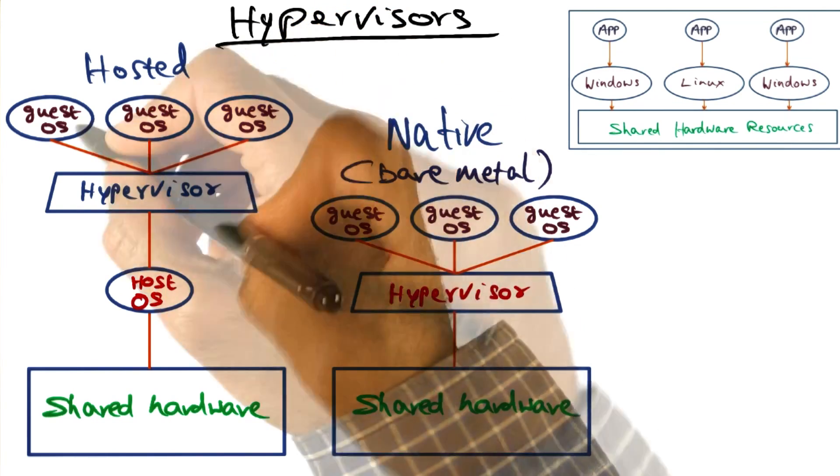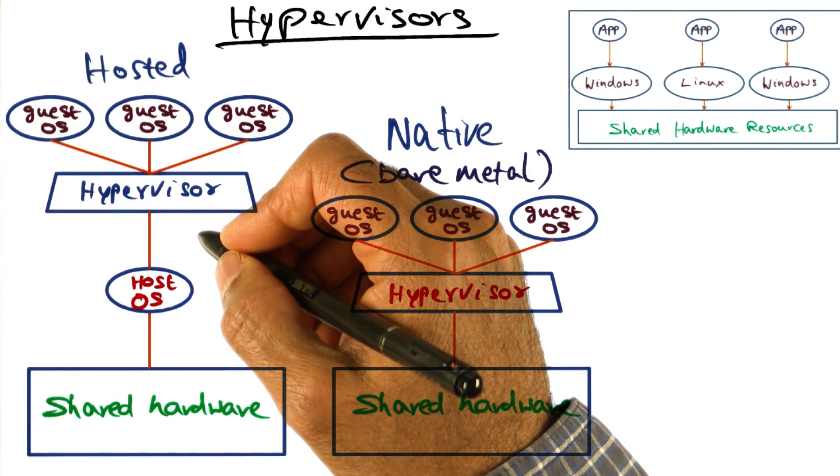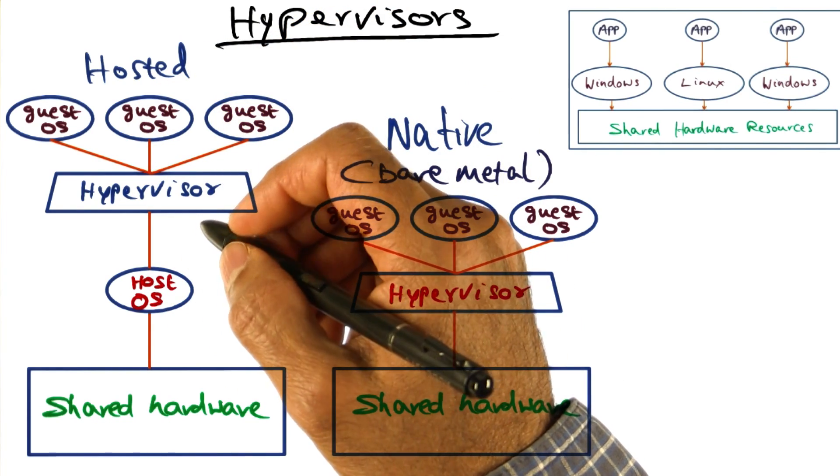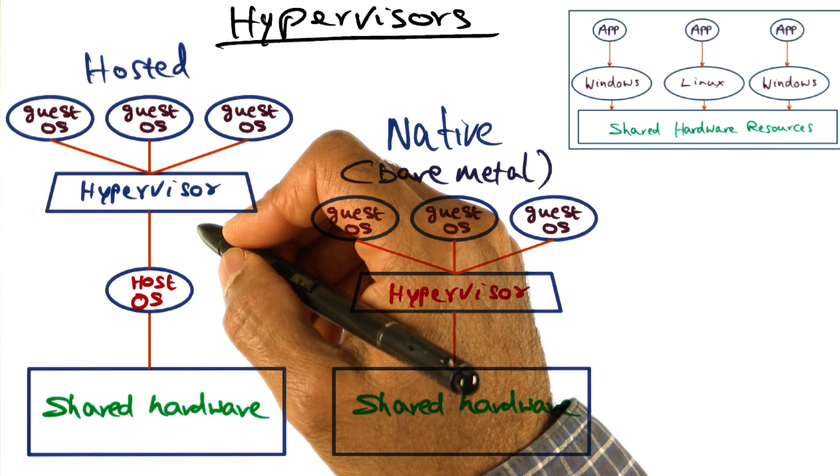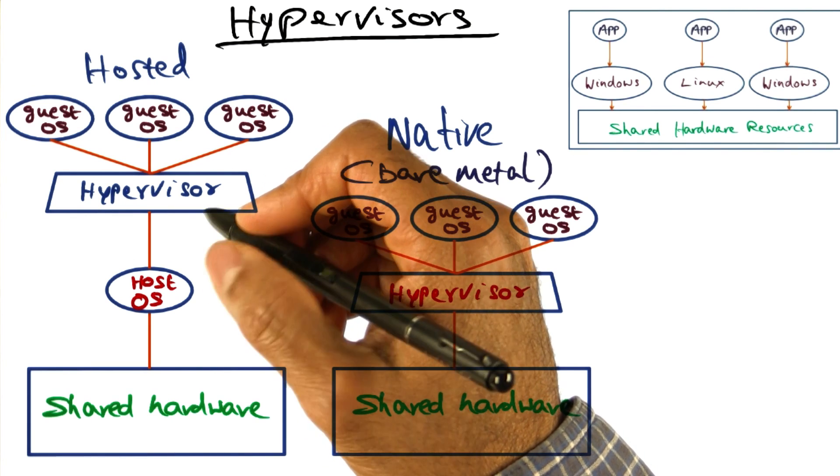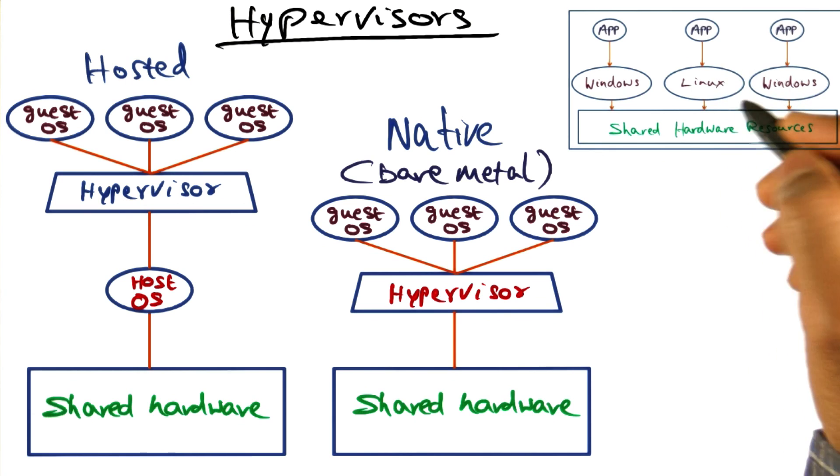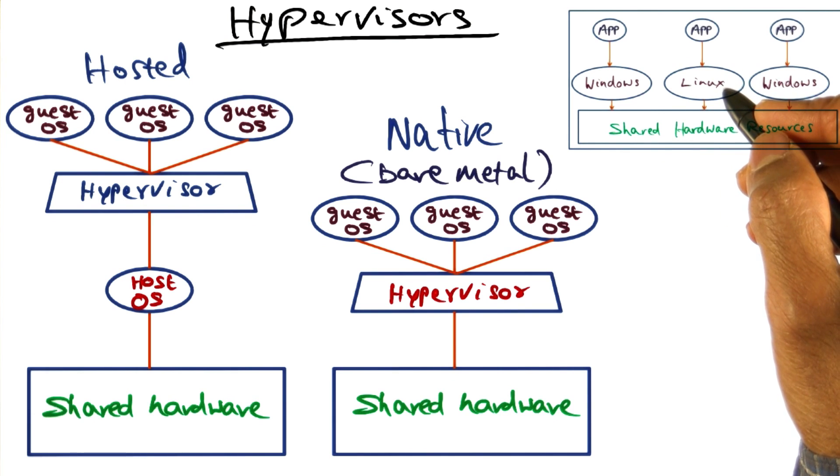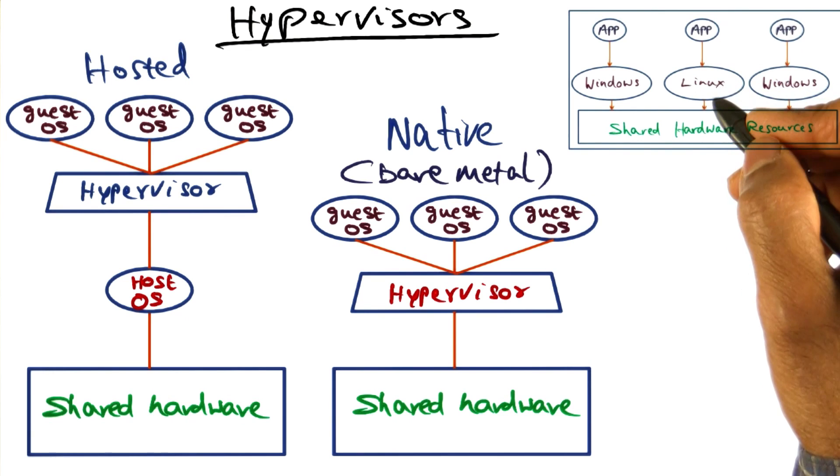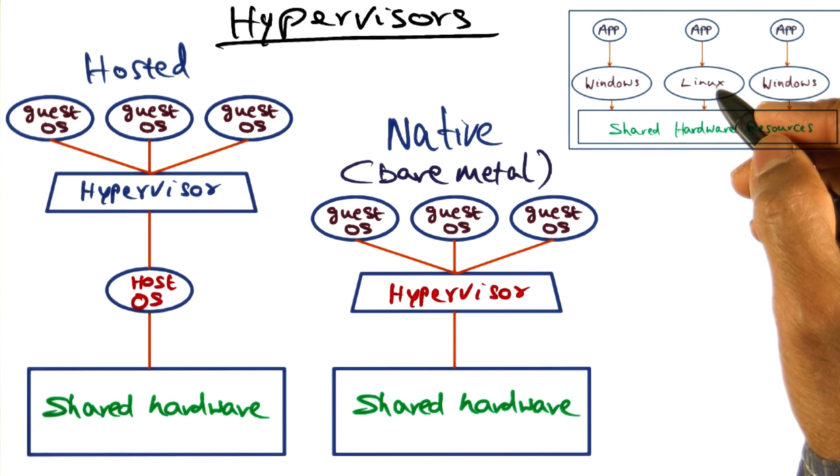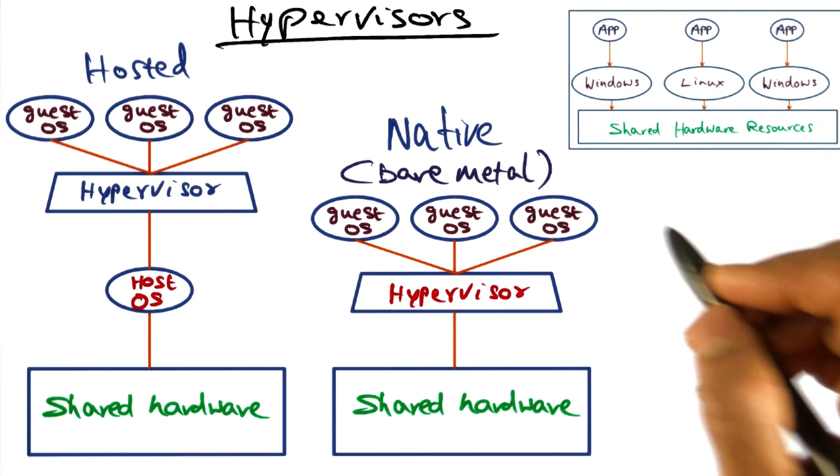Some examples of hosted hypervisors include VMware Workstation and VirtualBox. Both of these terminologies you may have heard of. If you don't have access to a computer that's running Linux operating system in this course, you're likely to be doing your course projects on a VirtualBox or a VMware Workstation that's available to run on Windows platform.